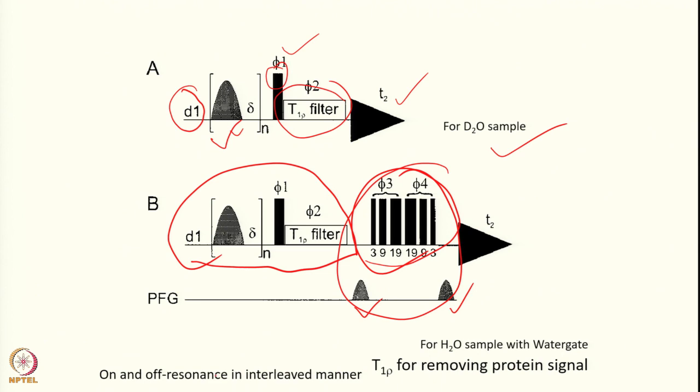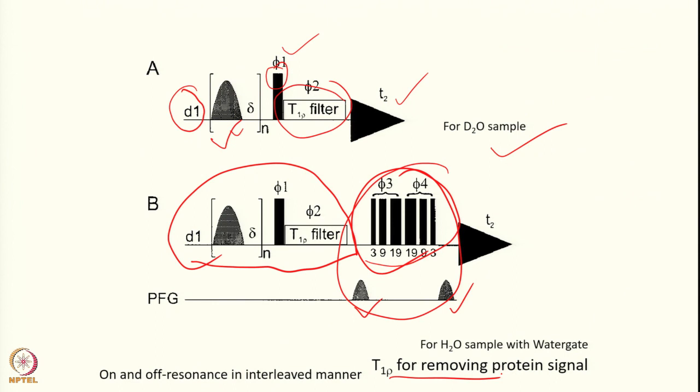We have to perform on-resonance and off-resonance experiments in an interleaved manner. On-resonance means we are saturating the protein signal exclusively; off-resonance means we are not saturating the protein signal — our irradiation is somewhere far away, around 20 ppm or so. The T1ρ filter is added to filter out or remove the protein signal. It ensures that we are only detecting the ligand and the effect of saturation on the ligand.